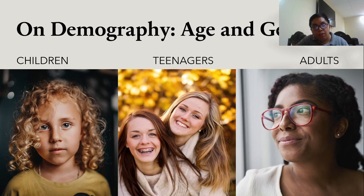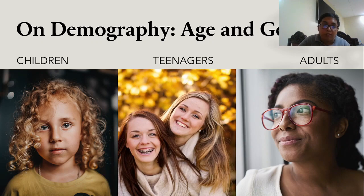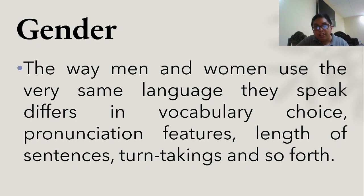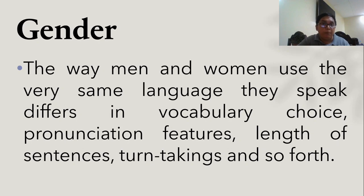We discover that demography really helps in understanding the language of a person. We have different ways in which children, teenagers, and adults speak. Gender is one factor: the way men and women use the very same language differs in vocabulary choice, pronunciation, length of sentences, turn-taking, and so forth. The manner in which a man speaks to a woman and vice versa, even within the same gender, tells us that gender really affects the communication process.